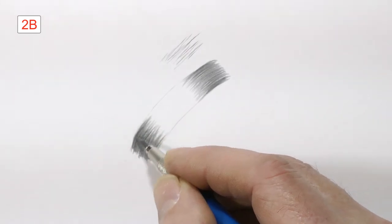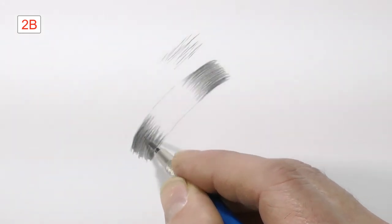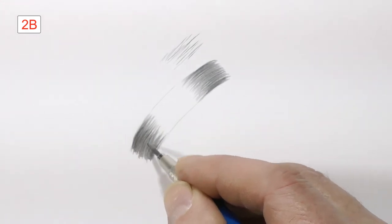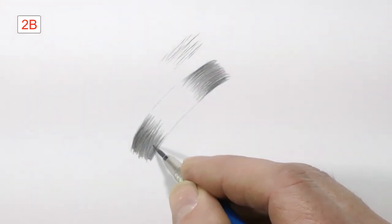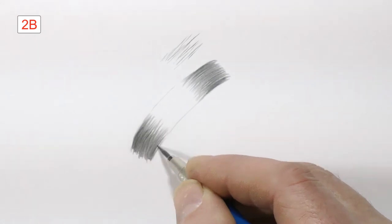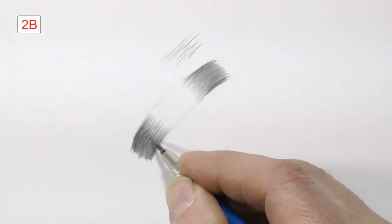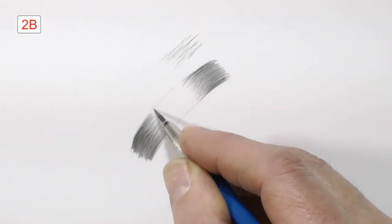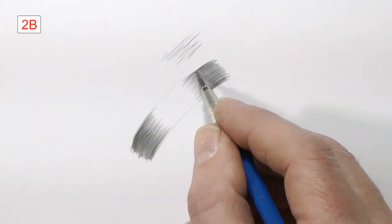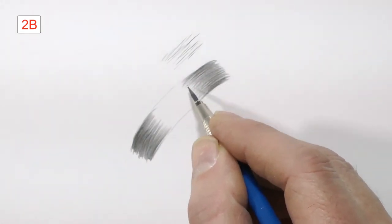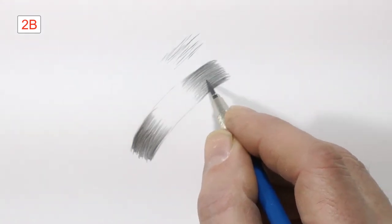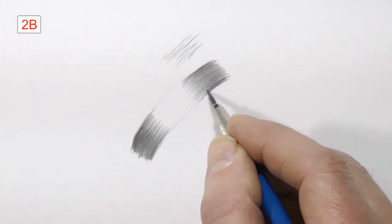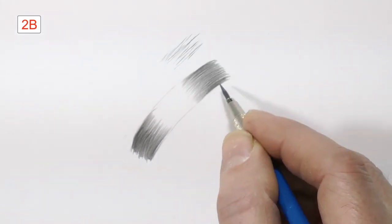I started with a reasonably sharp point, but now that's worn off, I'm quite happy to use the flat face. I don't need that level of detail in the center. Right. You'll reach a point where the 2B is beginning to look a bit grainy.